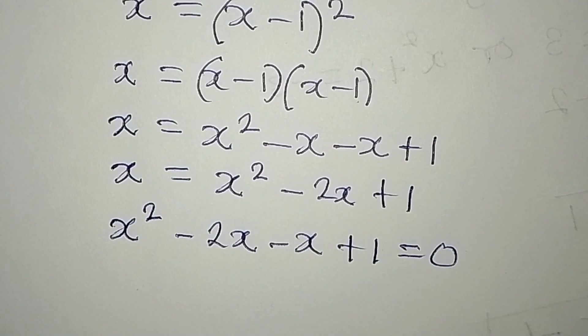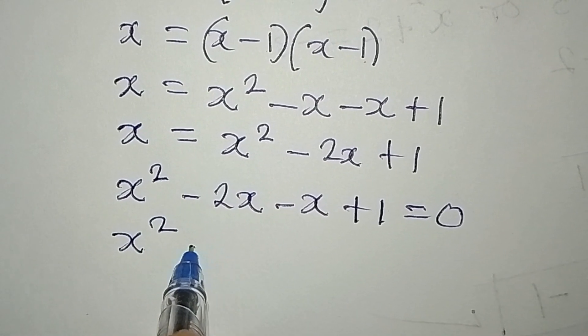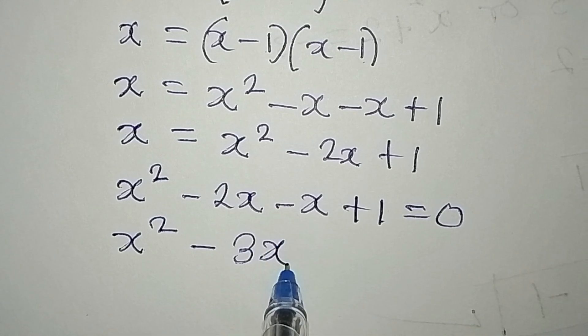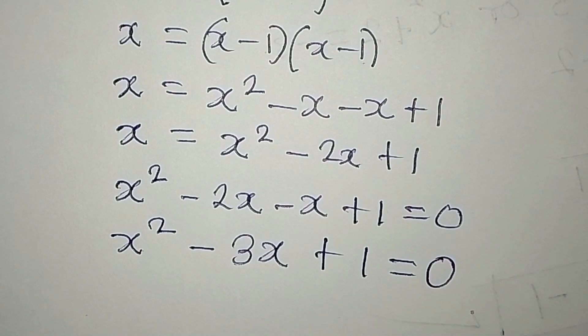So x squared minus, put these two together to get negative 3x. Then plus 1. And that is equal to 0.